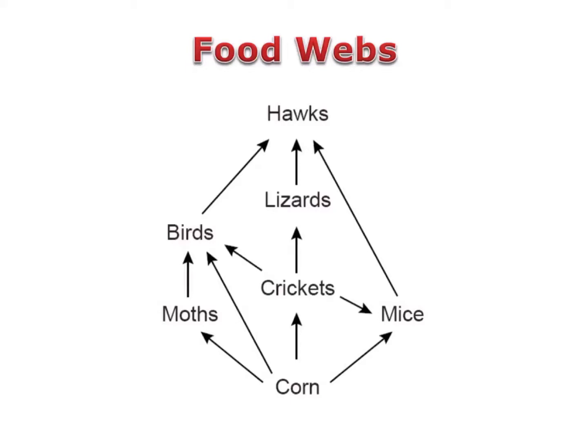Because food webs show multiple food chains, they can give you more information about a specific population. For instance, some organisms might be primary consumers in one food chain, but in a different food chain, they're secondary consumers. You can't see this with a food chain — you can only see this with a food web.